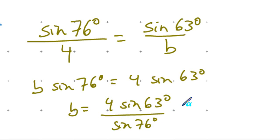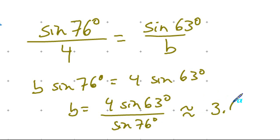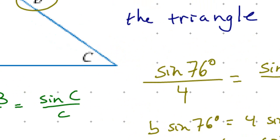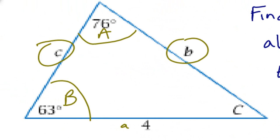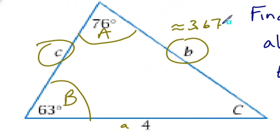Using a calculator gives an approximation for B of approximately 3.67. So that side length is roughly 3.67.